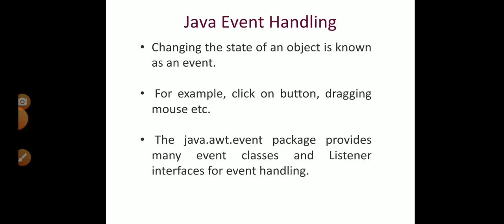First, we are going to discuss what is Java event handling. Changing the state of an object is called an event. For example, if you click a button or drag a mouse, these are all called events. The java.awt.event package is used for supporting event handling. Which package supports Java event handling? It is the java.awt.event package.